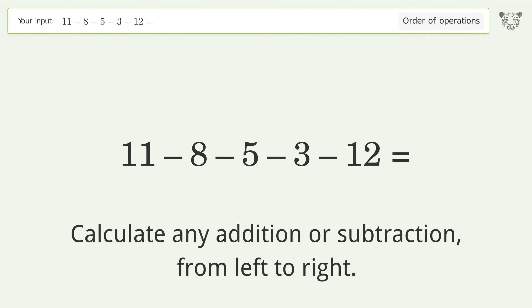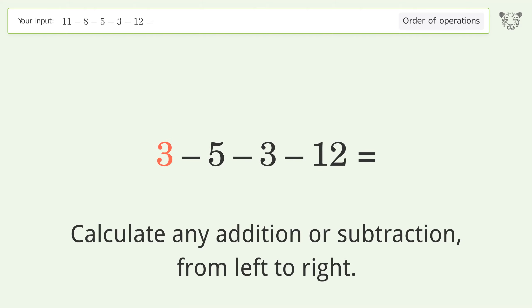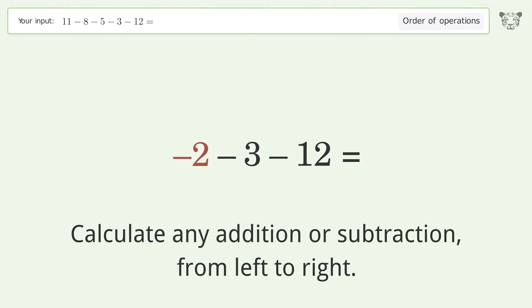Calculate any addition or subtraction from left to right. 11 minus 8 equals 3. 3 minus 5 equals negative 2. Negative 2 minus 3 equals negative 5.